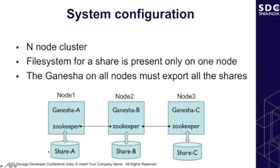What we want to achieve is: if a client comes to node one, it should still see all three shares. Similarly, a client coming from node two should also see all three shares.